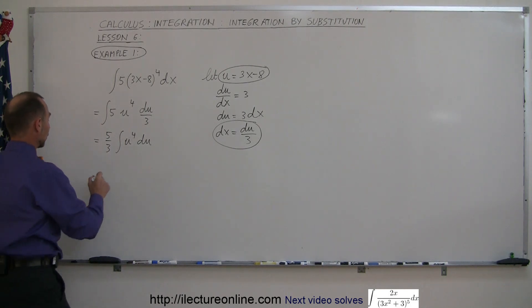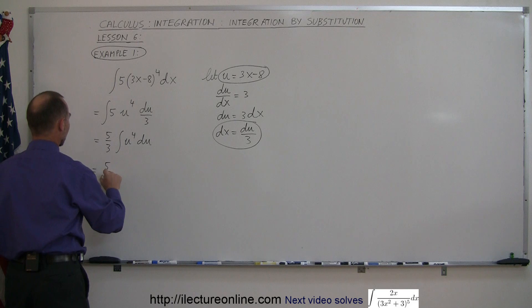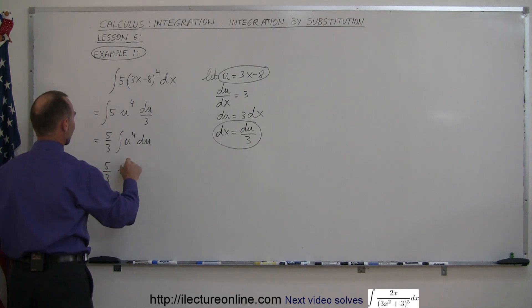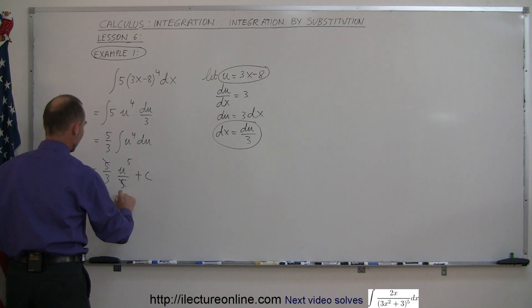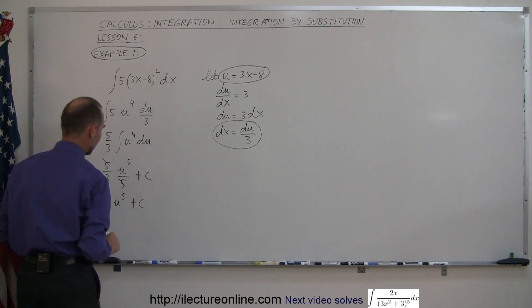Let's do the integral. This is equal to 5 over 3 times u to the fifth power over 5 plus a constant of integration. We can see that the 5s cancel out, so this can now be written as 1 over 3 u to the fifth plus a constant of integration.